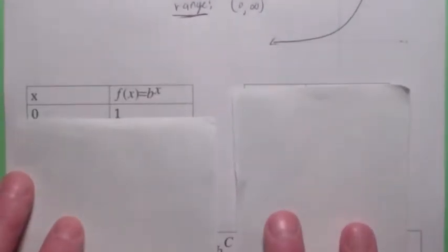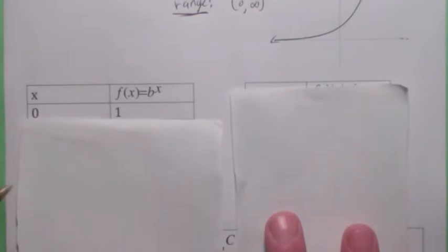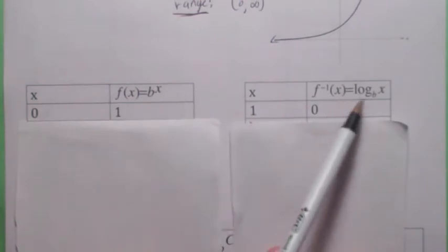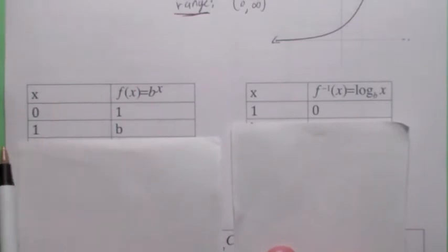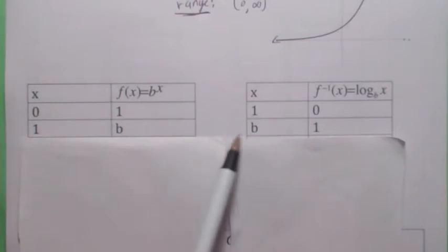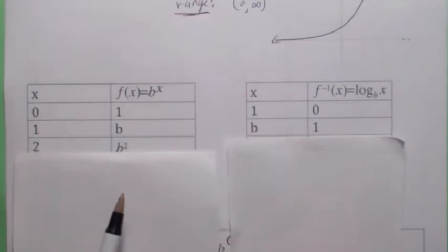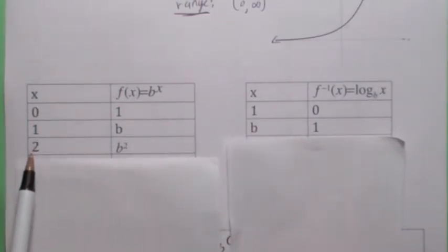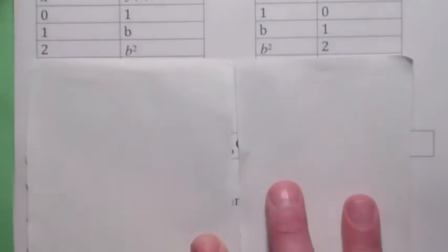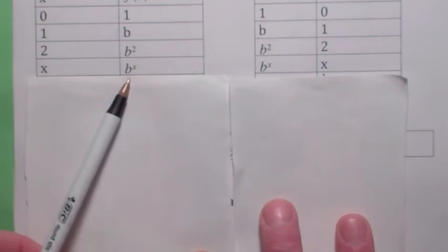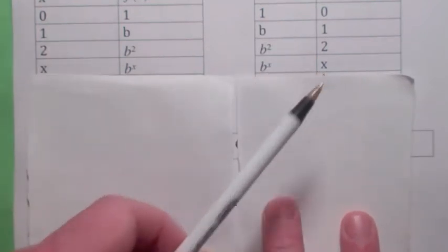If you have the exponential function b to the x, the first property says b to the zero equals one. So on the inverse function, we're going to call that inverse function log base b of x — this says log base b of one equals zero. On the exponential function, b to the one is b, so when you switch the coordinates, this says log base b of b equals one. If b to the two equals b squared, log base b of b squared equals two. And in general, the log base b of b to the x equals x.